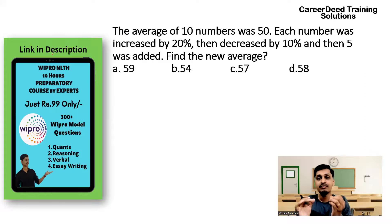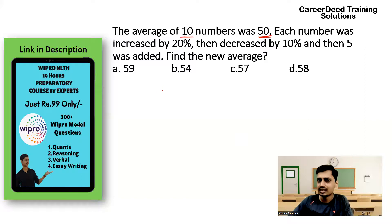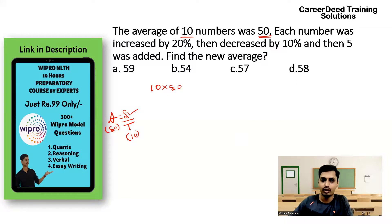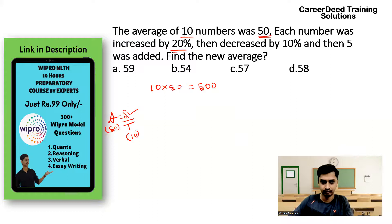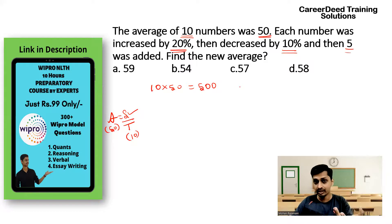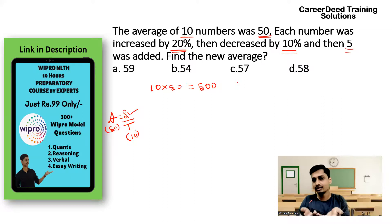This question is based on averages. The average of 10 numbers is 50, so what is the sum of all 10 numbers? We know average = sum of all observations divided by total number of observations. So sum = 50×10 = 500. Now you are increasing each number by 20 percentage, then decreasing each number by 10 percentage, then adding 5 to each number. You have to find the new average. If you increase each number by 20%, the total sum also increases by 20%. When you decrease each number by 10%, the total sum also decreases by 10%.